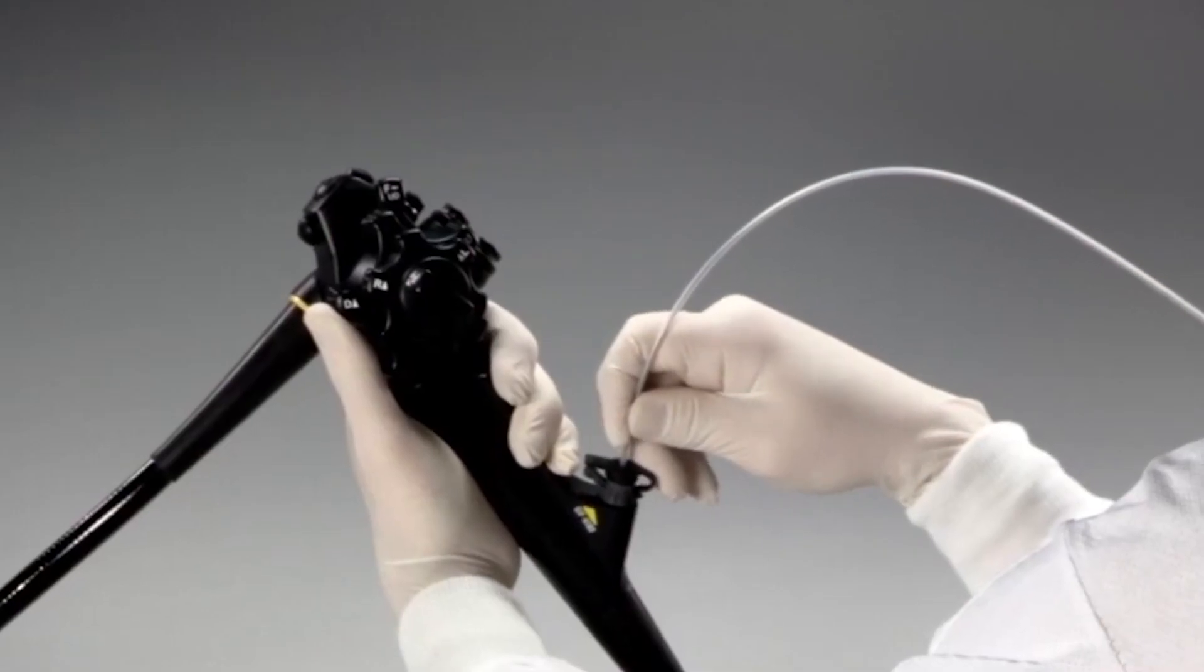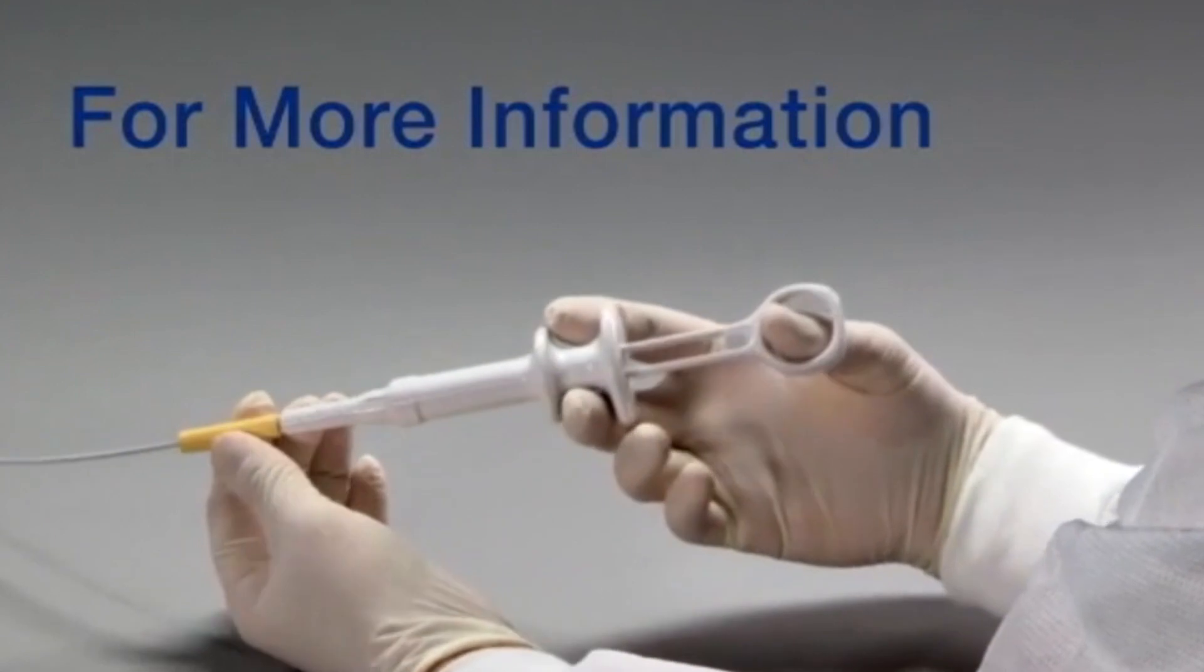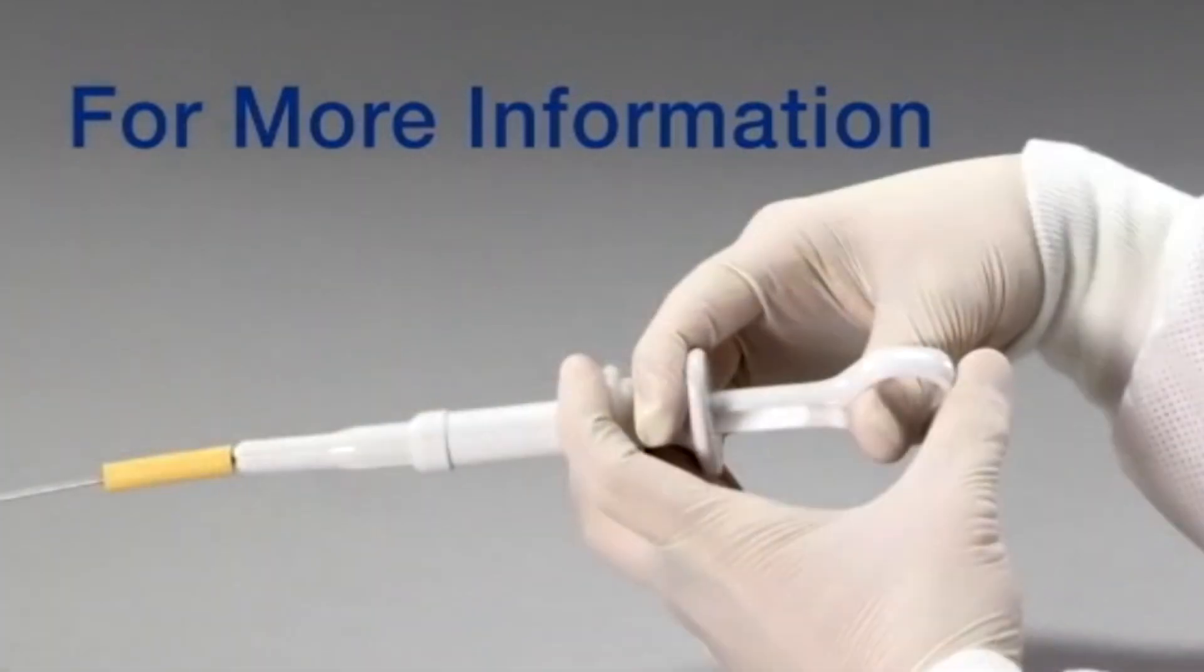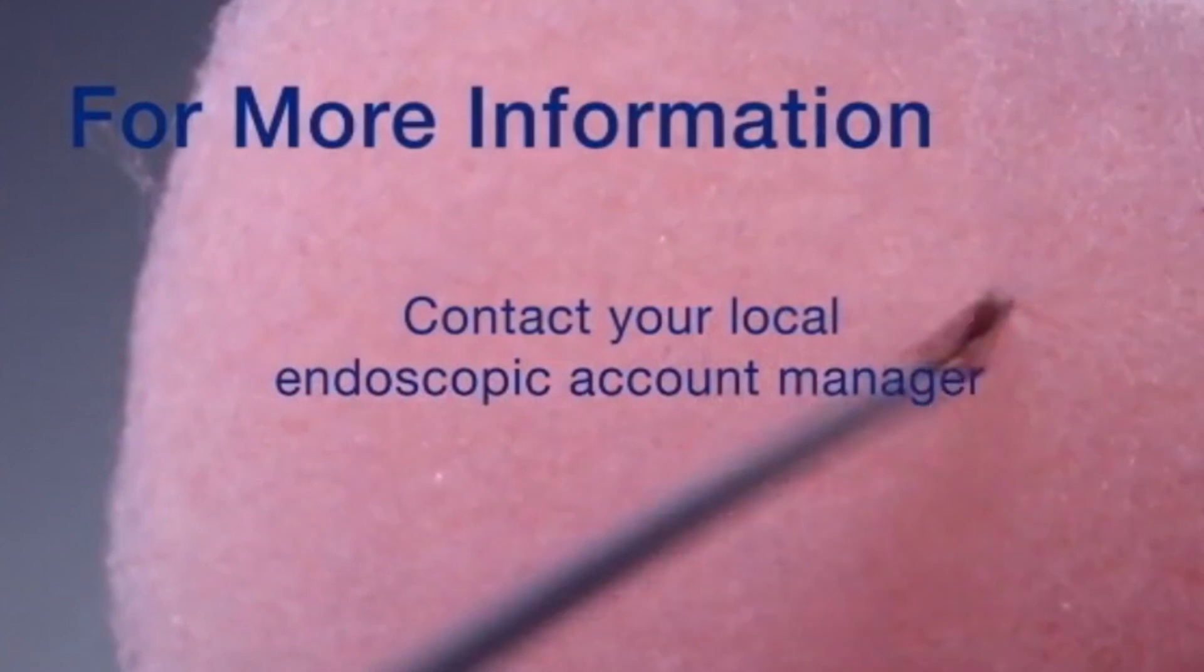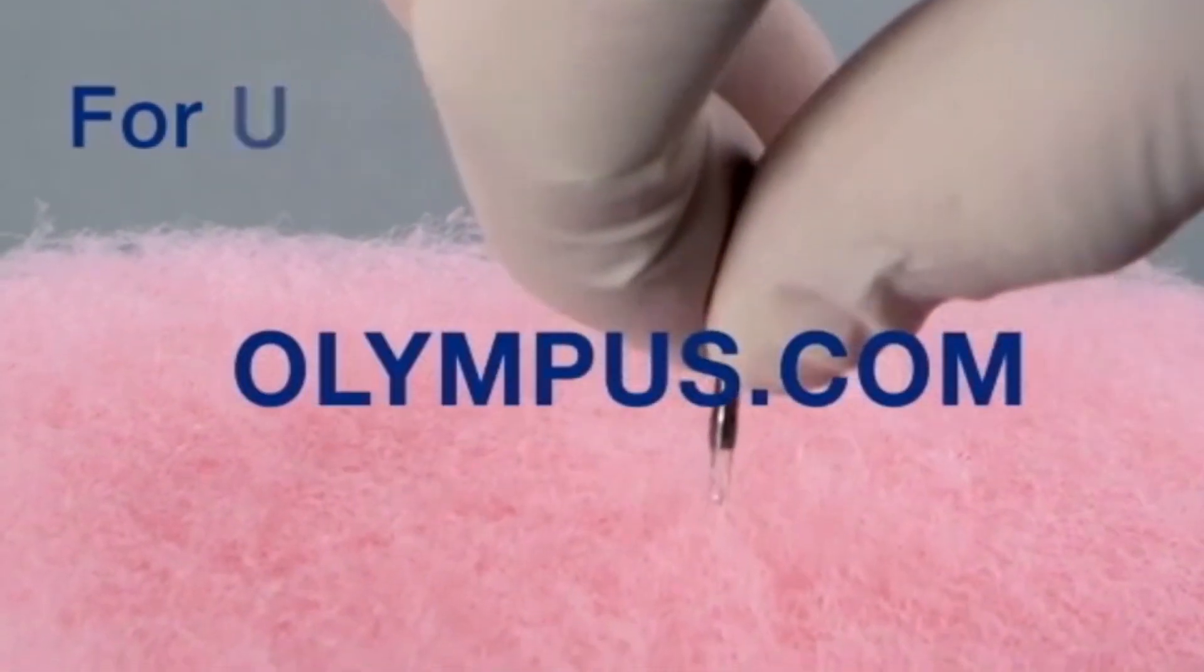You can now safely remove the device from the scope by pulling it out of the biopsy port. This concludes the QuickClip Pro training video. If you have any questions or need additional information about QuickClip Pro please contact your local endoscopic account manager or visit Olympus.com